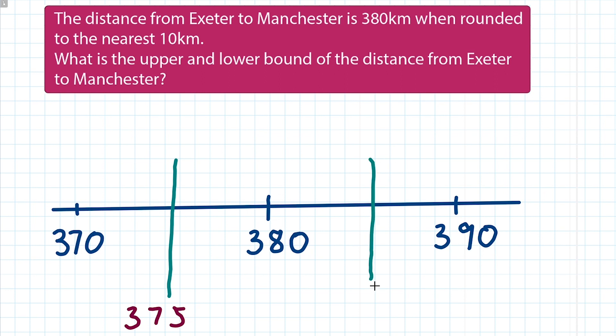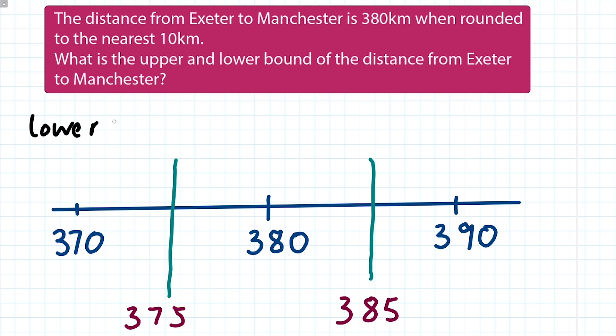The lower bound is 375 and the upper bound is halfway between 380 and 390, which is 385. Those two points are the boundaries within which the number must fall so that when rounded it gives 380. Anything less than 375 we would round down. And 385 is the point at which we would start rounding up to 390 — it couldn't actually be 385 since we'd round that up, but that's where the boundary is. Lower bound: 375. Upper bound: 385.